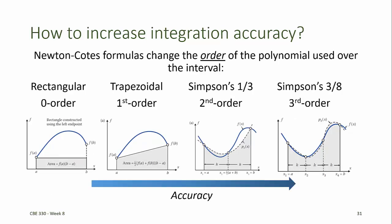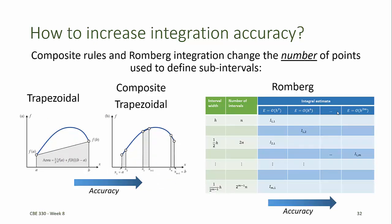So far, we've talked about different methods for increasing the integration accuracy. The Newton-Cotes formulas change the order of a polynomial used over the interval to improve accuracy: the rectangle rule is a zero-order polynomial, the trapezoidal rule is a first-order polynomial, Simpson's one-third rule uses second-order polynomials, and Simpson's three-eighths rule uses cubic or third-order polynomials. We can also increase accuracy by changing the number of points used to define the subintervals, as we saw when we composed composite rules from each of the Newton-Cotes formulas. Romberg integration is another method that takes advantage of using additional points in the domain, or subdividing the subintervals, to improve accuracy.